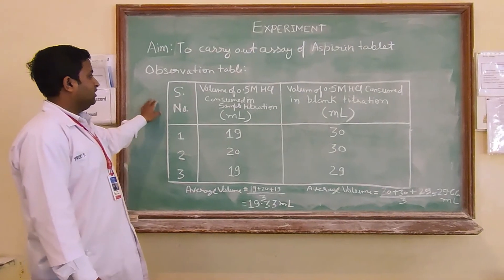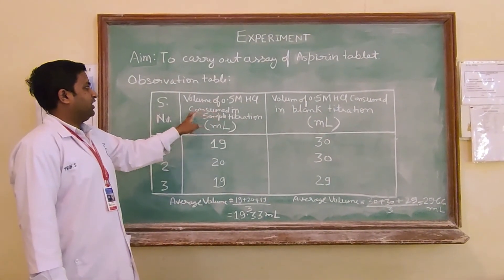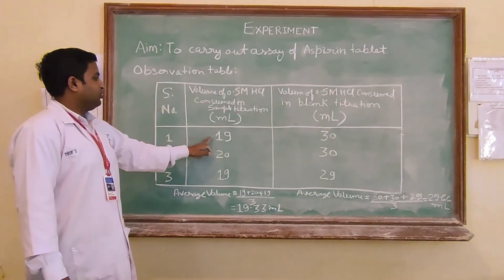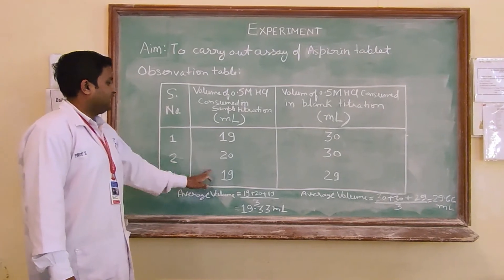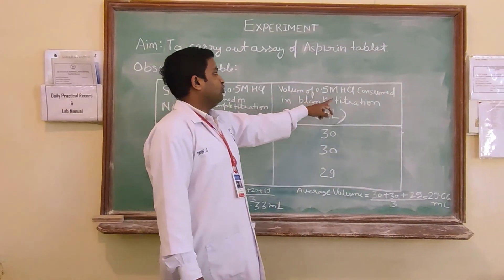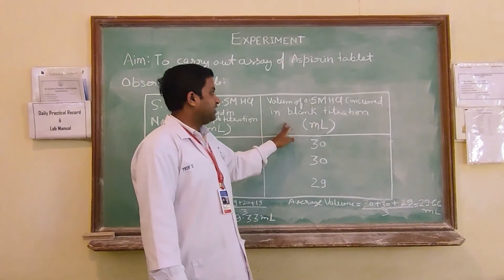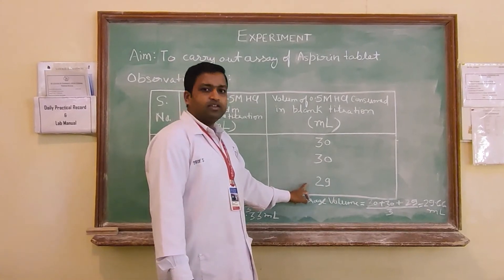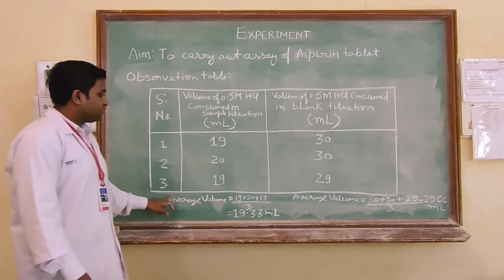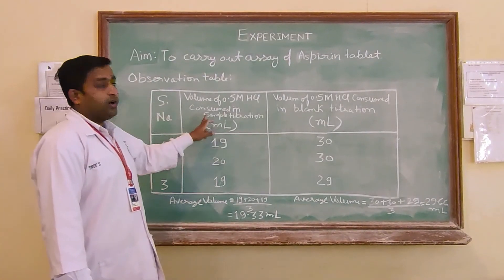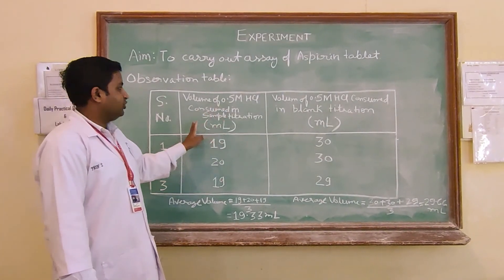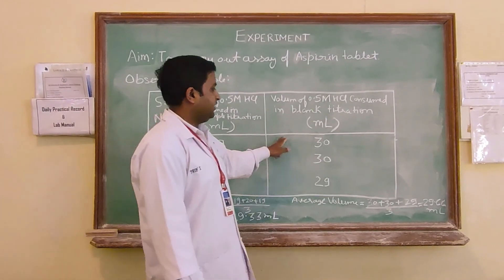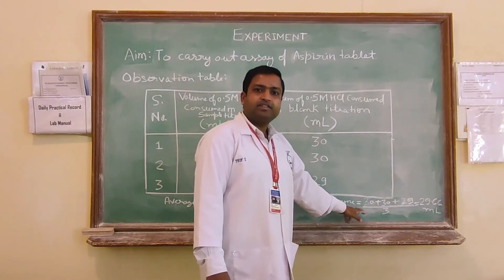Here is the observation table. You can see that volume of 0.5 molar HCl consumed in titration of aspirin in first titration it was 19 ml, in second it was 20 ml, in third it was 19 ml. And volume of 0.5 molar HCl consumed in blank titration was in first titration 30 ml, in second 30 ml, in third titration 29 ml. The average volume of 0.5 molar HCl consumed in titration of aspirin was 19.33 ml and in blank titration it was 29.66 ml.